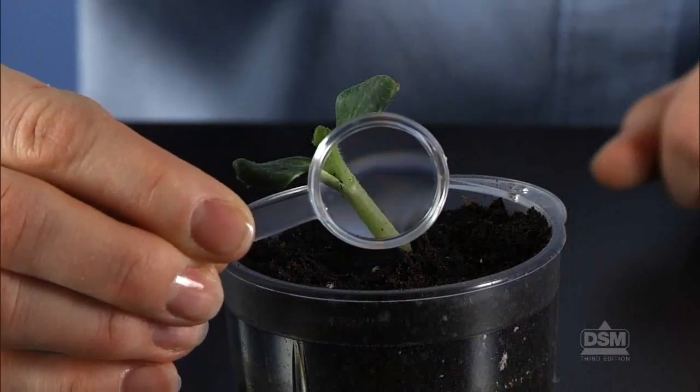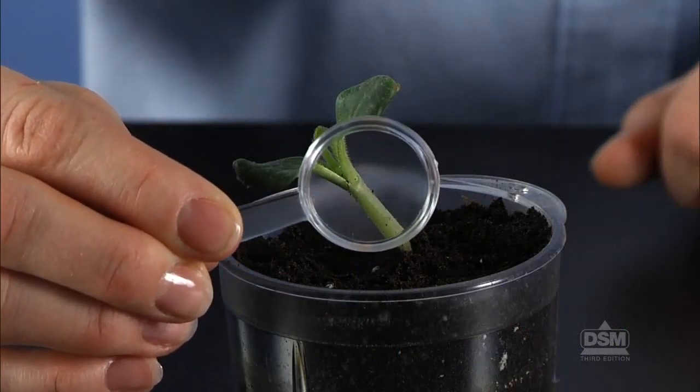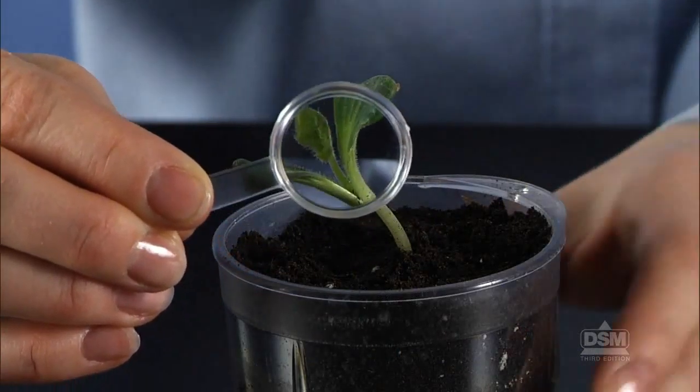Distribute a magnifier to each student and have them examine the stems of their plants and describe their shape, color, and firmness. Encourage students to speculate what would happen if the stems were soft and mushy. This should help students identify an important function of the stem, which is to hold the plant up.